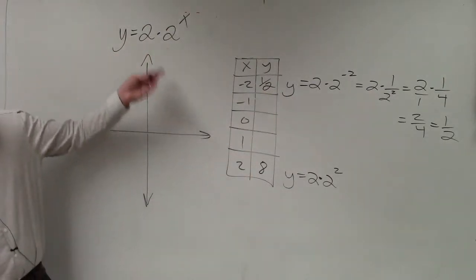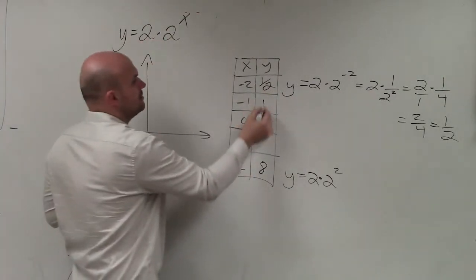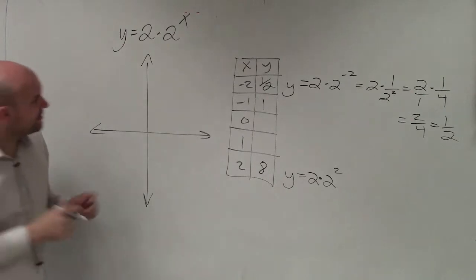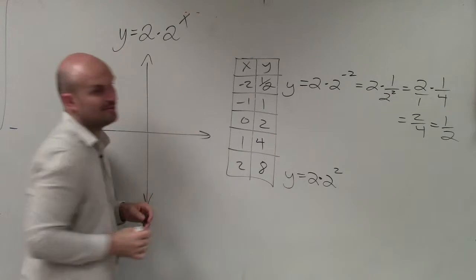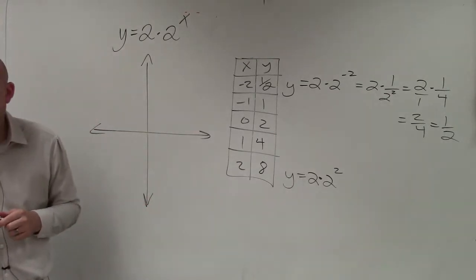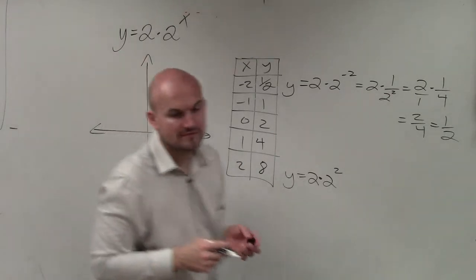Now, if we did negative 1, that would be 1. If we did 0, we would have 2. And if we did 1, we get 4. Does everybody agree with me? Yes? No? Maybe so? Kind of? OK.